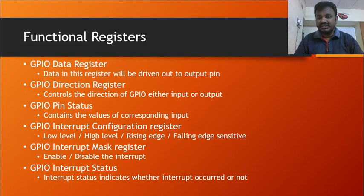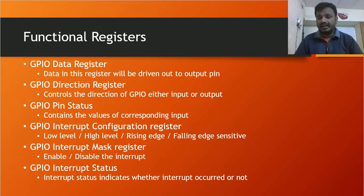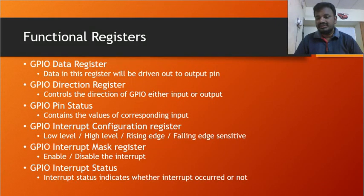The GPIO data register: when the GPIO is configured as output, whatever data is in this register will be driven out to the output pin. The GPIO direction register controls the direction — input or output. If you set the direction register bit to one, the pin acts as output; if zero, it acts as input. The GPIO pin status register contains the value of the corresponding input pin. For example, if the pin is at 3.3V, the pin status will be high; if at zero volts or ground, the pin status will be zero.